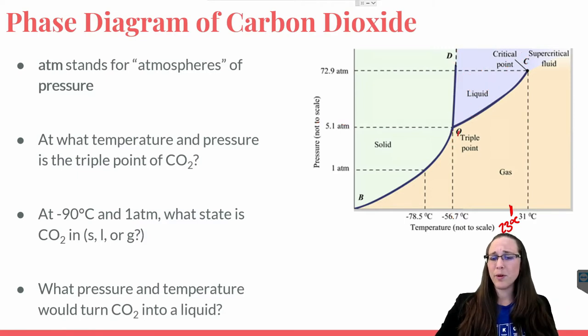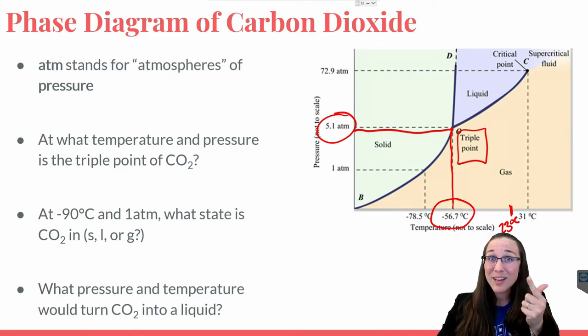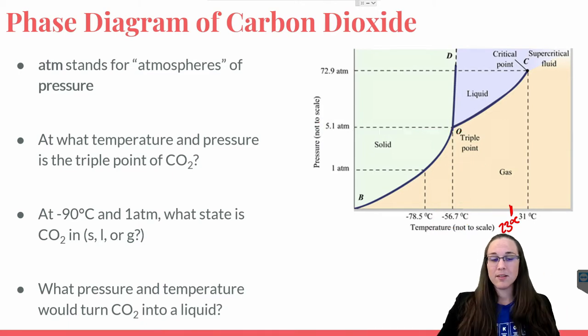That's what we're aiming to do in the lab. What's this whole triple point thing here in the middle? Well, that triple point happens to be the exact temperature and pressure, 5.1 ATMs and negative 56.7 degrees Celsius, that would make carbon dioxide a solid, liquid, and gas all at the same time.